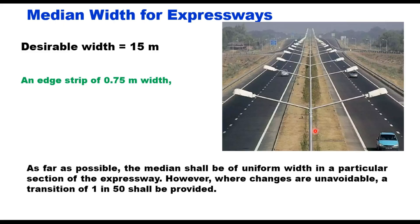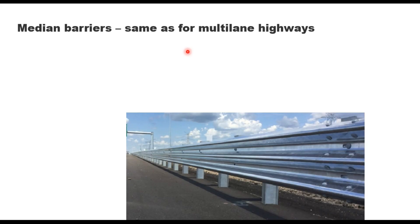As far as possible, the median shall be of uniform width in a particular section of the expressway. However, where changes are unavoidable, a transition of 1 in 50 shall be provided. Metal barriers will be the same specification as for multi-lane highway.